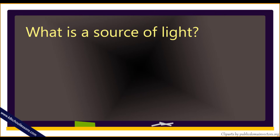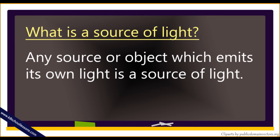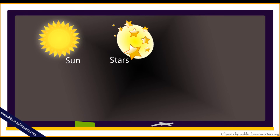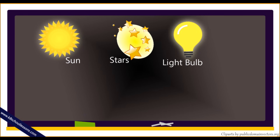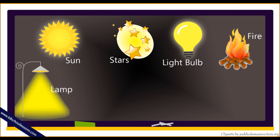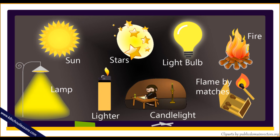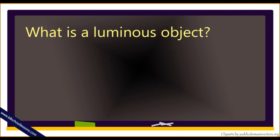What is a source of light? Any source or object which emits its own light is a source of light. Examples include the sun, stars, light bulb, fire, lamp, lighter, candlelight, and flame by matches.